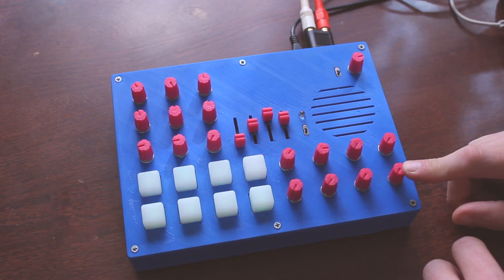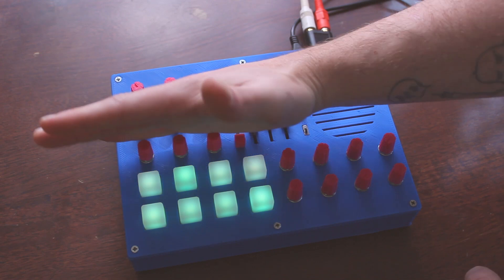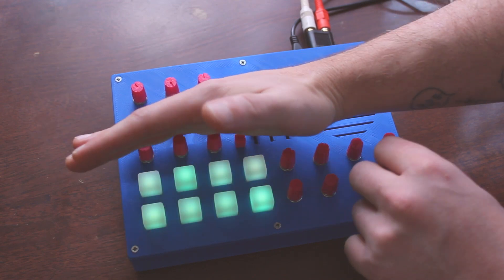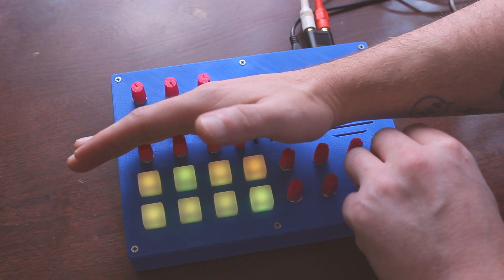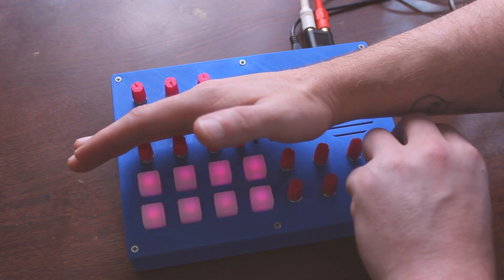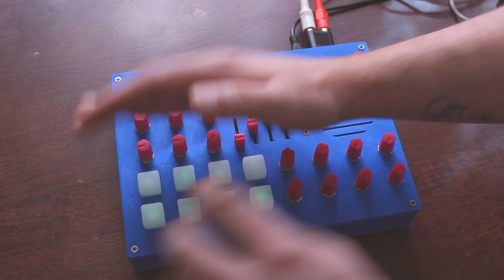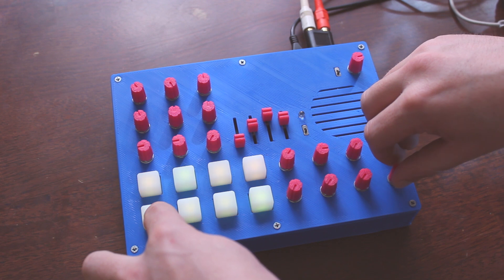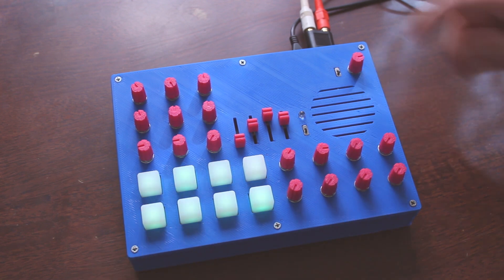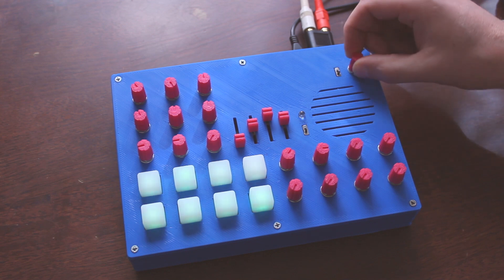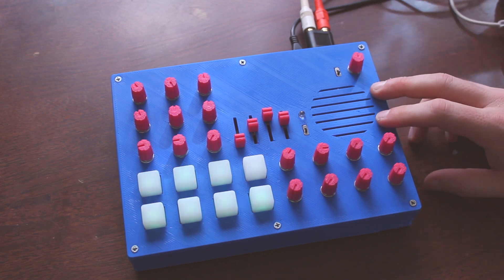And then this last knob here is what key you're in. Let me block the light so you can see the LEDs. But, as you change it, you see the LED colors change, indicating you're on a new key. And then we just have our main volume out here. That's pretty much all there is to it.